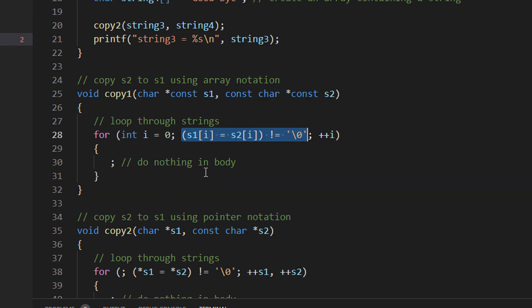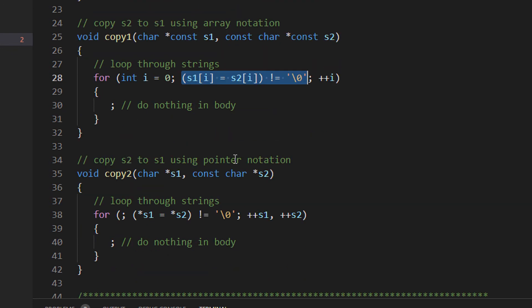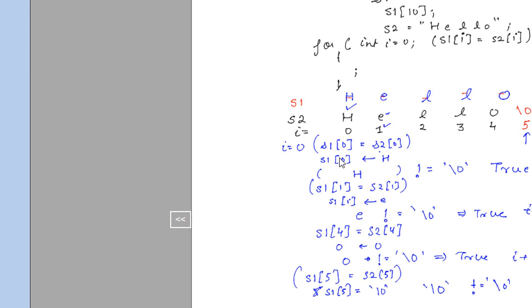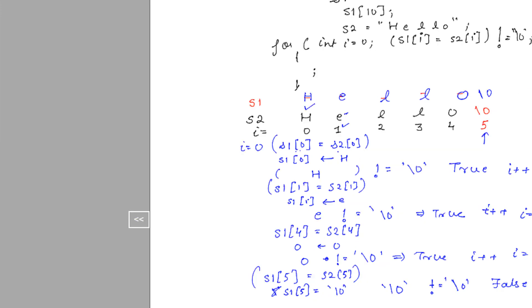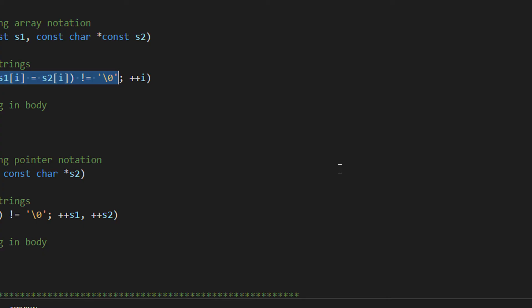So the entire string is now copied. The assignment is done — '\0' is already copied into s1, but the loop is not processed further. It's a good doubt! The student confirms understanding and thanks the instructor.